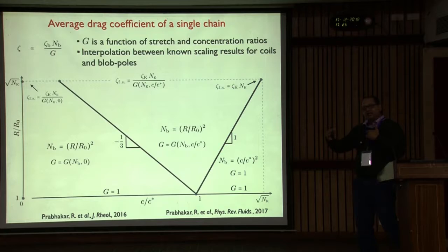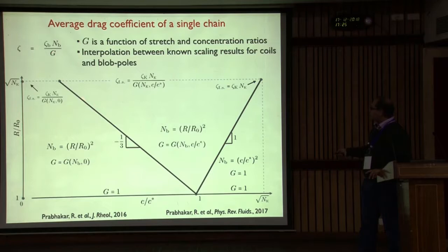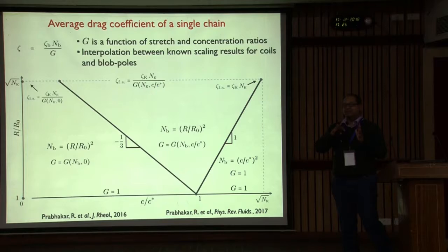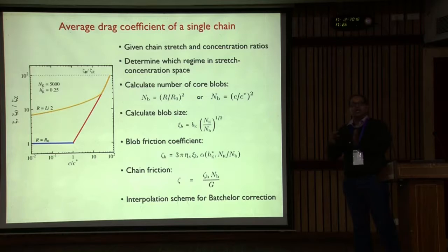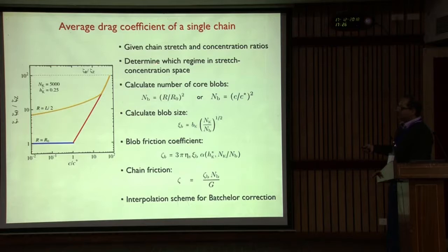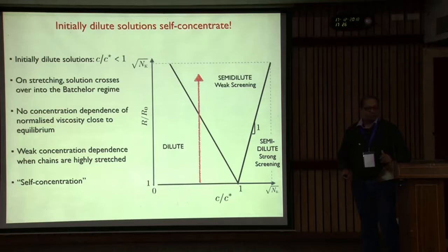I won't go into the details of the interpolation scheme — it's quite messy — but it keeps the friction coefficient continuous (not differentiable, but continuous) as you cross from one region to another. Given the stretch and concentration, I find the regime on the stretch-concentration plot, calculate the number of blobs, calculate the blob size depending on the regime, calculate the friction of a single blob, and with the number of blobs compute the correction factor. That gives the total expression for the friction. That's chain friction using blob theory.